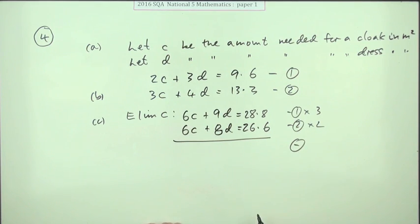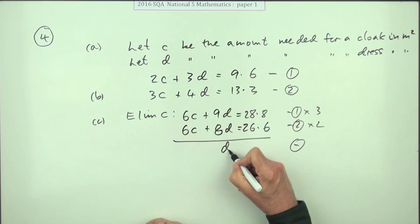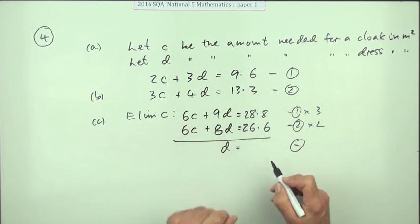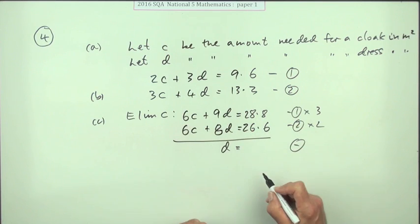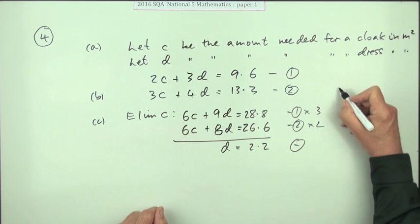And I'll need to subtract them because they've all got the same signs. They obviously disappear, and luckily that just comes down to d very nicely. And that's a nice wee subtraction, all the top numbers are bigger than all the bottom numbers, so that's just 2.2.